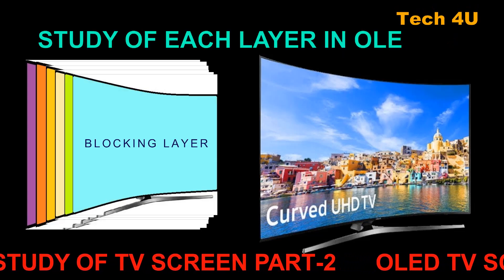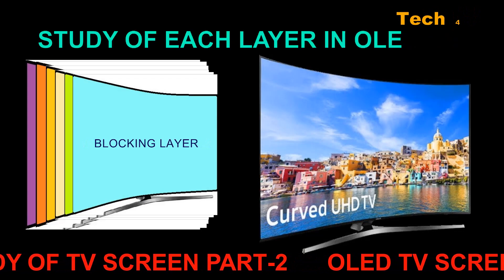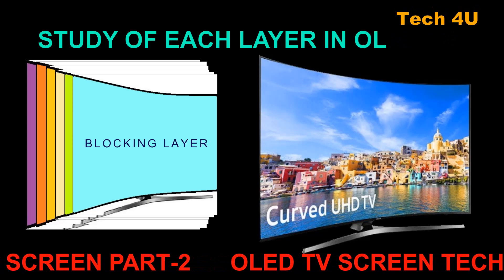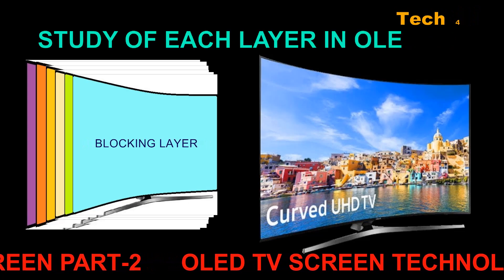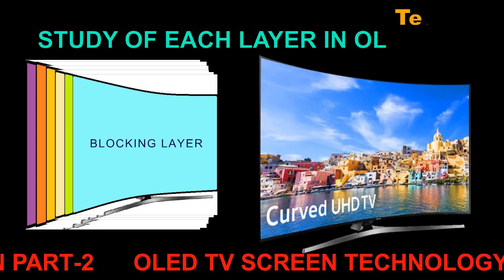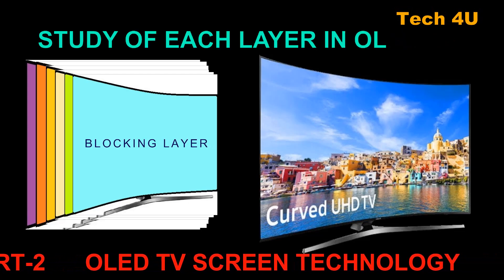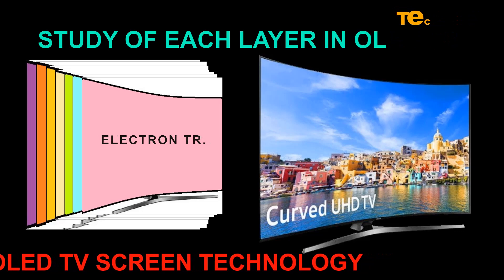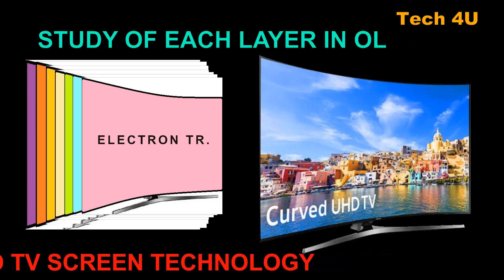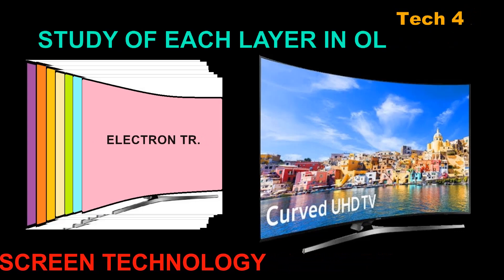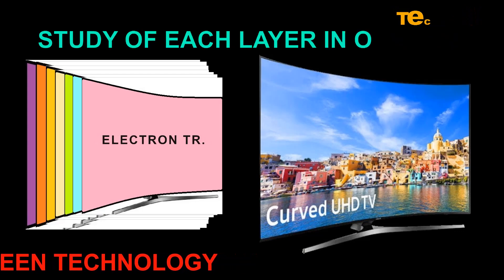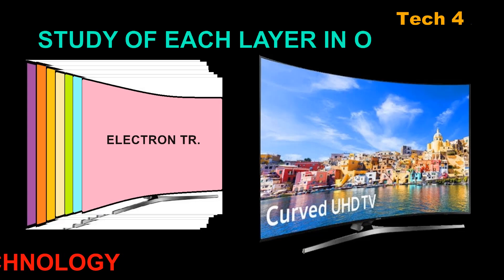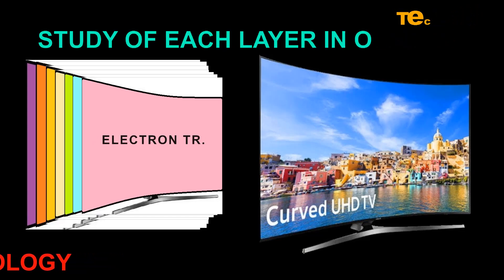The sixth one is the blocking layer, or BL. The blocking layer is commonly used to improve OLED technology by confining electrons or charge carriers to the emissive layer. The seventh one is the electron transport layer, or ETL, which supports the transport of electrons across it so they can reach the emissive layer.